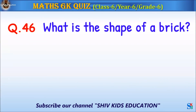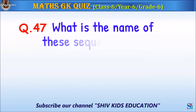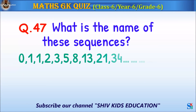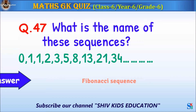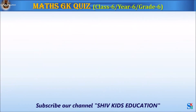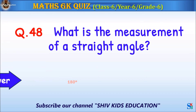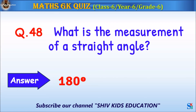Question 46: What is the shape of a brick? The answer is cuboid. Question 47: What is the name of this sequence? The answer is the Fibonacci sequence. Question 48: What is the measurement of a straight angle? The answer is 180 degrees.